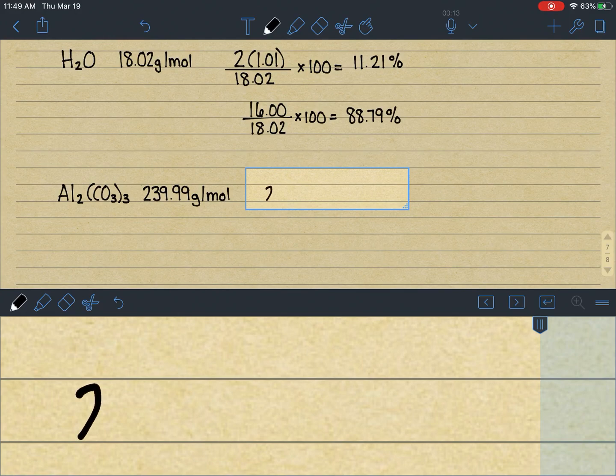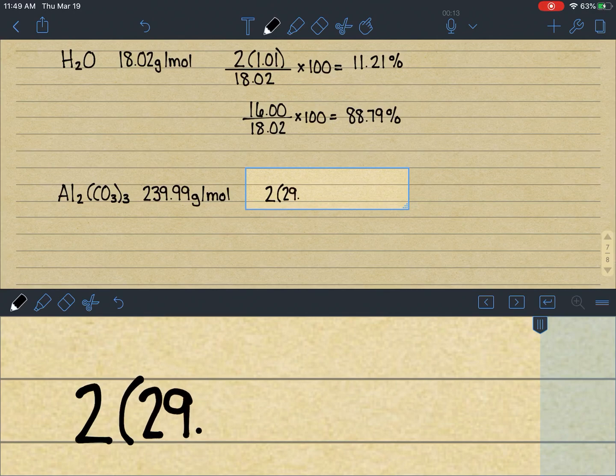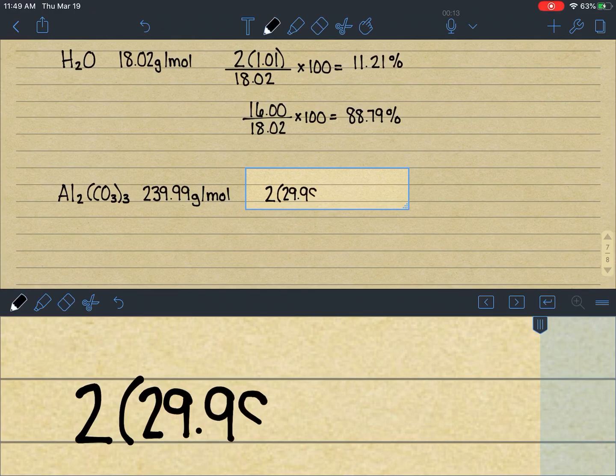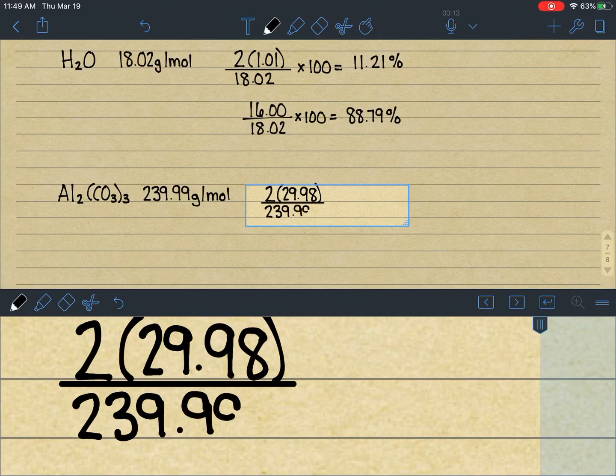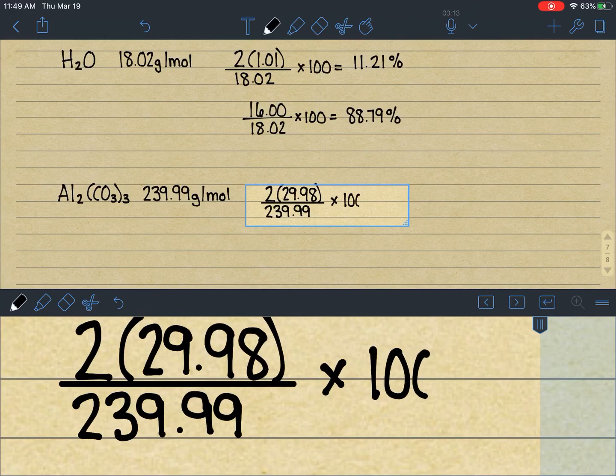Again, with aluminum, there's two in that compound with a molar mass of 29.98, and then we'll divide that by the molar mass. What's nice when you're doing this away from a screen, you can actually just plug that right into your calculator, and you don't have to write it all out if you are not making mistakes with this.